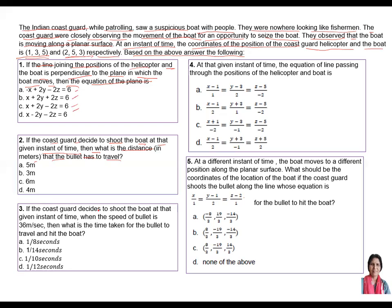Part three: If the Coast Guard decides to shoot the boat at the given instant of time, when the speed of the bullet is 36 meters per second, what is the time taken for the bullet to travel and hit the boat? Using the distance from part two and speed of 36 m/s, the options are 1/8, 1/14, 1/10, or 1/12 seconds.